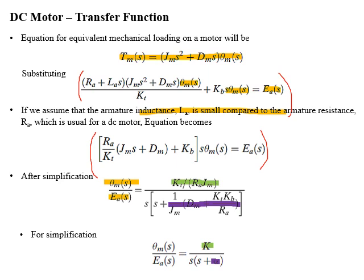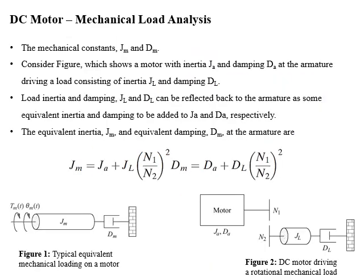This is the desired transfer function whose input is applied voltage and output is angular displacement. In the design process, through this we can determine what angular displacement will be covered by the DC motor for a given input EA of s. Now we will do mechanical load analysis for the DC motor. In forming the transfer function, we used an equivalent mechanical load represented in figure 1, using equivalent inertia and equivalent viscous damping constants.